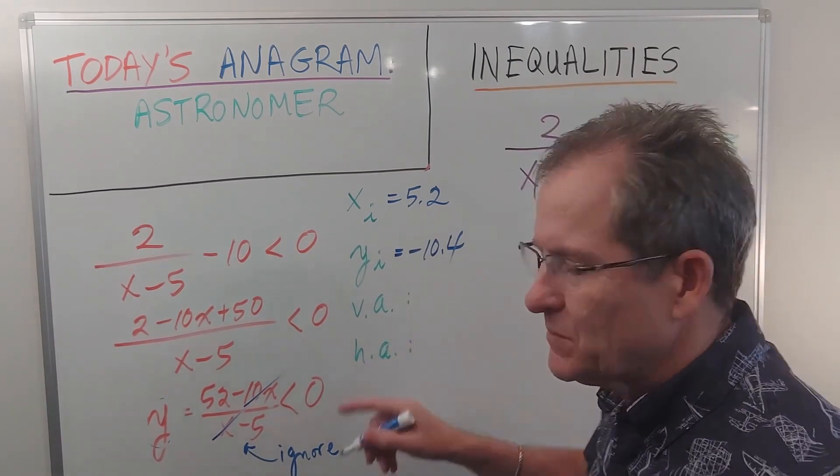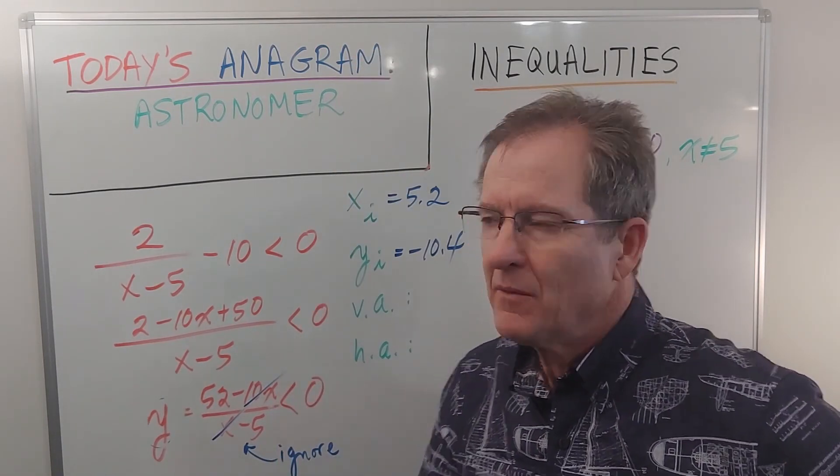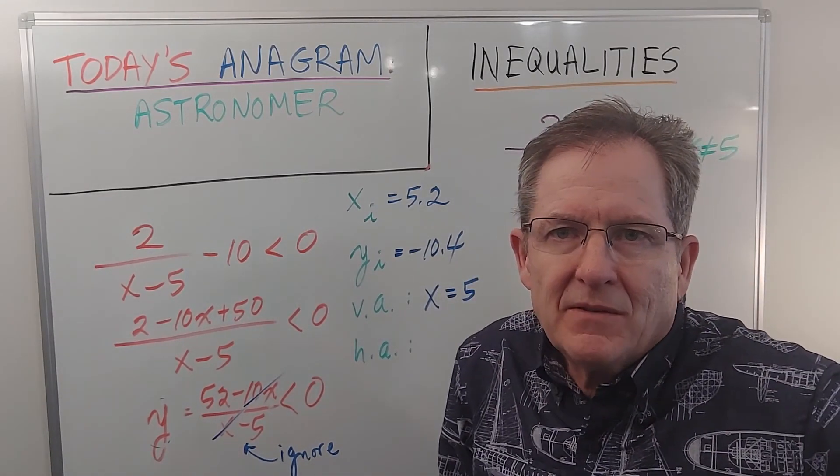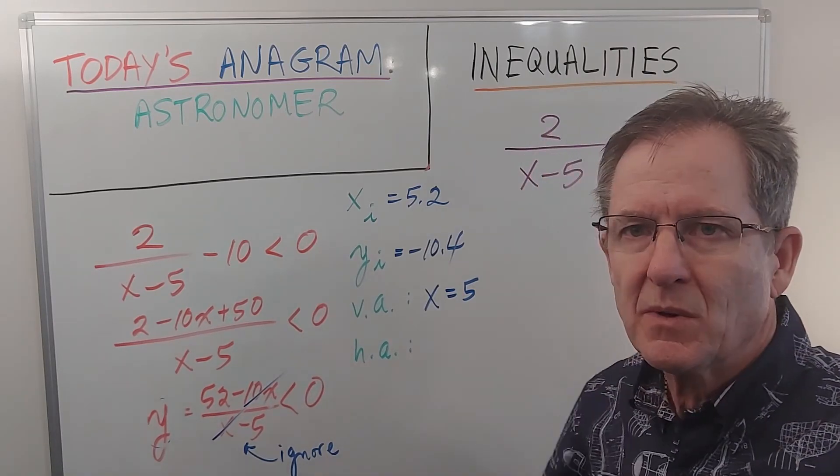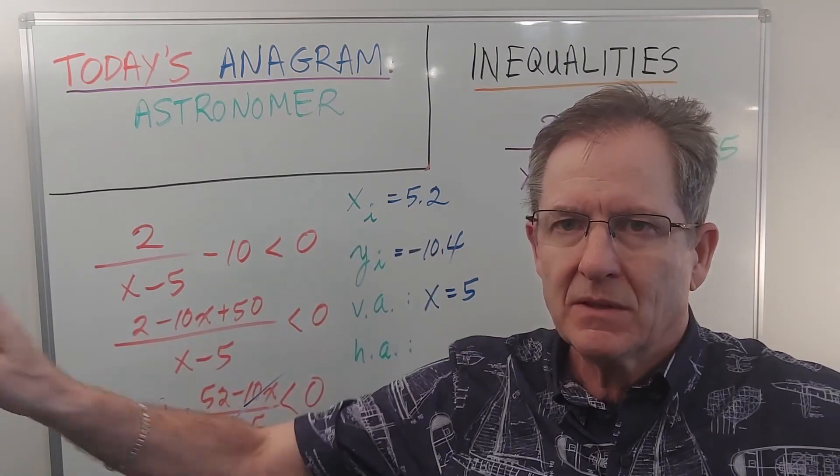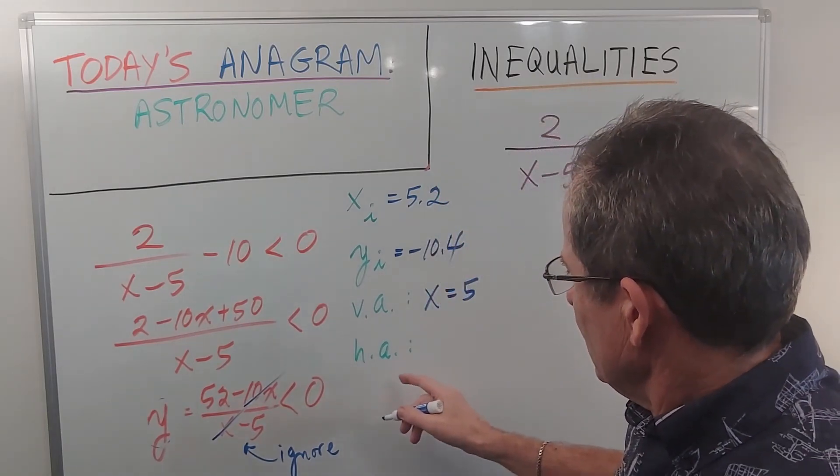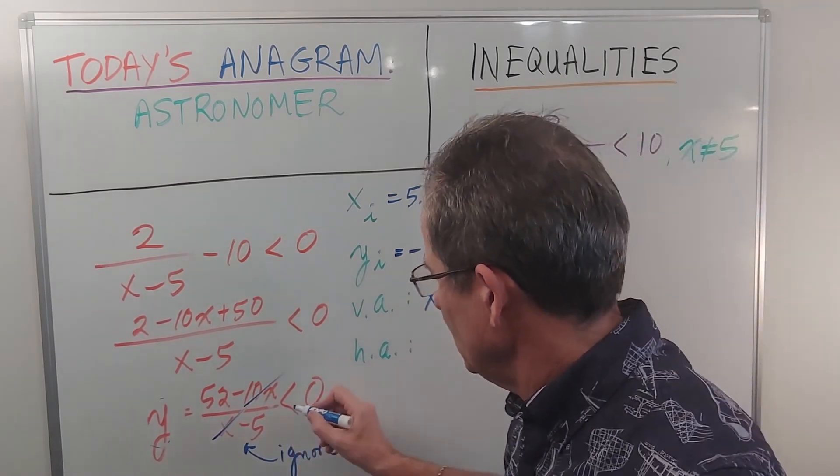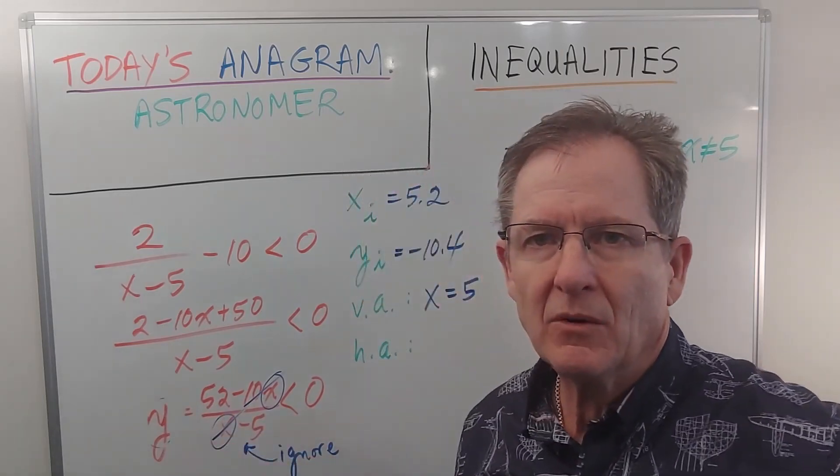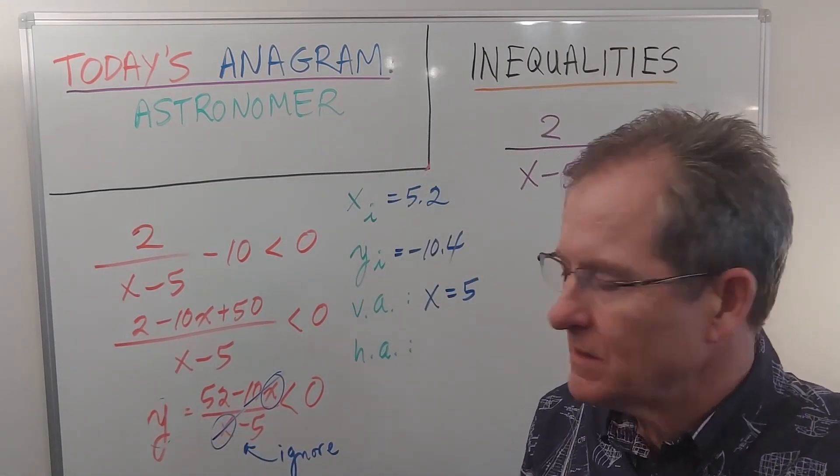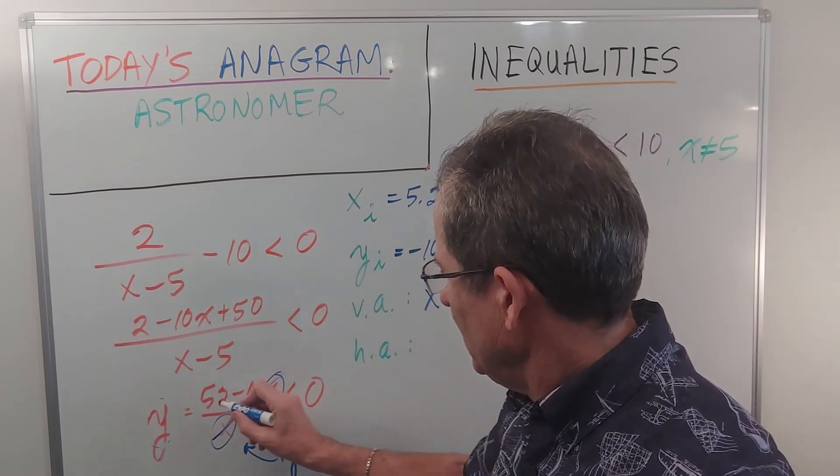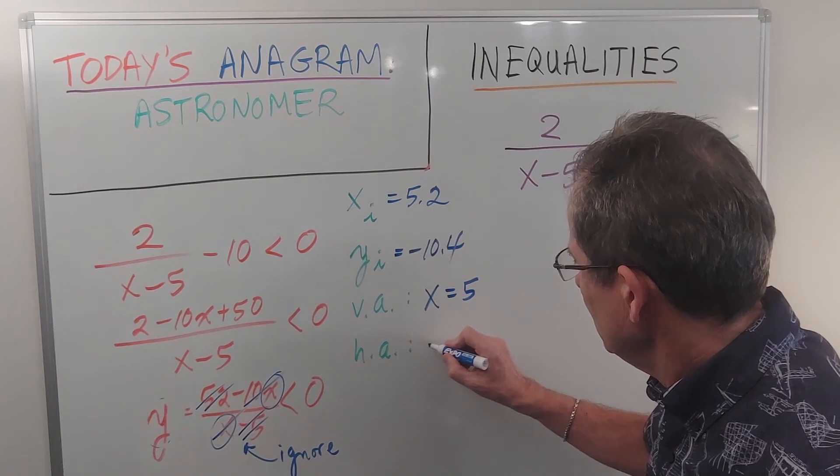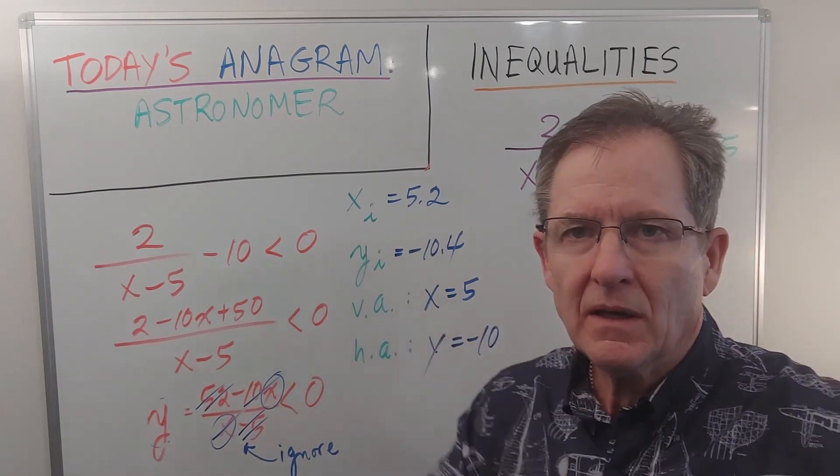Now as far as the vertical asymptote, that's the vertical line where the graph cannot cross. And that would be where x equals 5 because x can't be 5, so the graph doesn't pass there. And as far as the horizontal asymptote, that's where the graph levels off horizontally. If you go way left or way right, what's the value where this graph levels off? To see that, you have to imagine that the x's get really, really big or really, really negative. And then these numbers will have no impact. So you just get negative 10x over x, or negative 10. So it will level off along the line y equals negative 10.